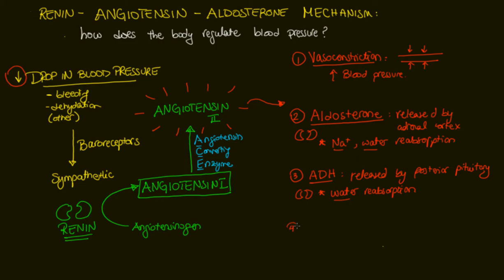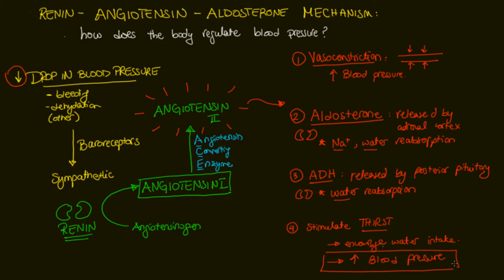The fourth effect is that angiotensin 2 is going to stimulate thirst, so you will feel thirsty, which triggers water consumption and encourages water intake — and that will again increase blood pressure. There you have it: this is the mechanism that ensures your blood pressure goes up in response to a drop in blood pressure.